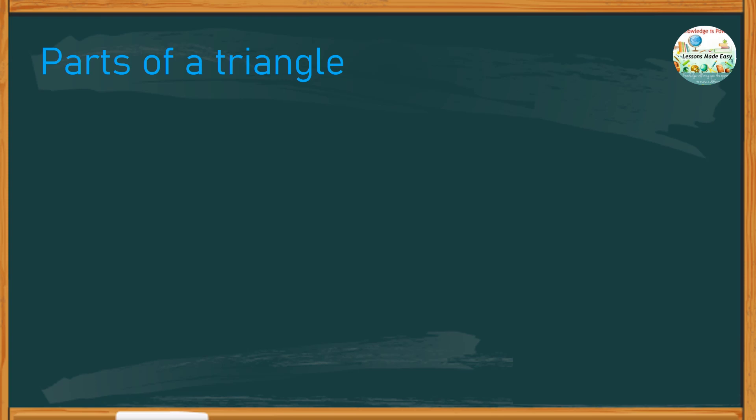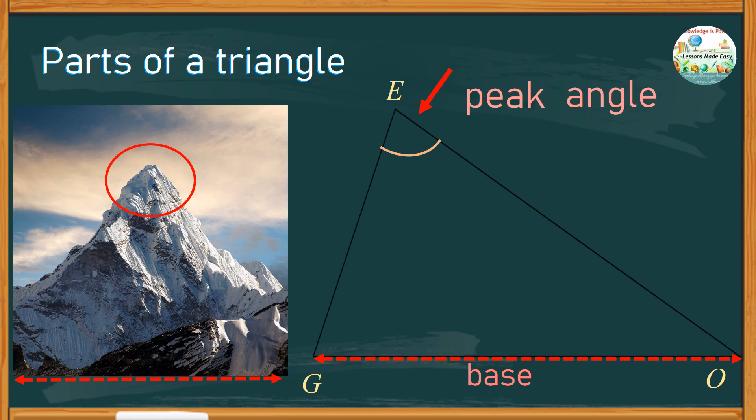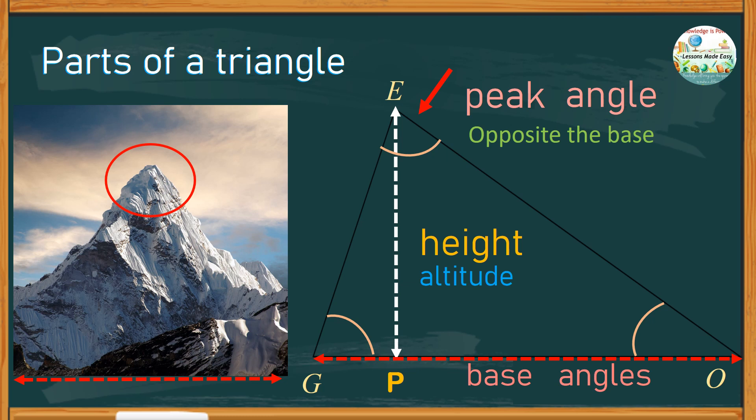Now that you know how triangles are named, it is just reasonable to also discuss some parts of a triangle. Basically, a triangle is just like a mountain, where the part that is parallel to the ground is called the base. And opposite the base is the peak, or the highest point of the mountain. In this given example, the peak is angle E. And it is also called the peak angle. The peak angle is always opposite the base. On the base, there are two angles, angle G and angle O. These are the base angles. And the line segment from the peak that is perpendicular to the base is called the height or altitude. When you say perpendicular, it has to be at an angle of 90 degrees with the given line.